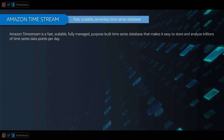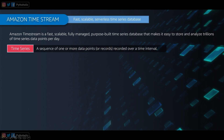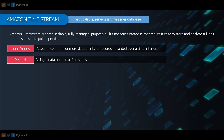Amazon Timestream is a fast, scalable, fully managed, purpose-built time series database that makes it easy to store and analyze trillions of time series data points per day. There are a few core concepts to understand. First, a time series is a sequence of one or more data points or records recorded over a time interval — like our temperature and time data, or the CPU or memory utilization of an EC2 instance over time. Second, a record is a single data point in a time series — for example, at 8 PM the temperature is 32 degrees.